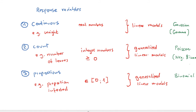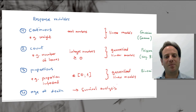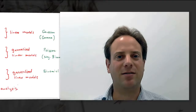There's another type I haven't mentioned yet. The fourth one is age at death — this is where we do survival analysis, and survival analysis can also be done using generalized linear models. As you can see, generalized linear models are quite important when we do statistical analysis, and it's good to be aware of that from the start onward.